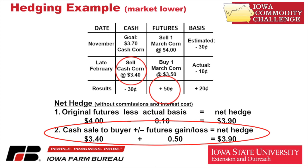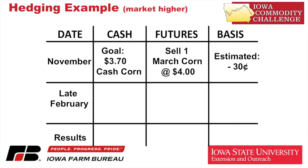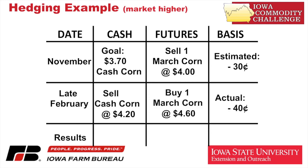That represents a $0.20 basis gain versus what we expected — basis being very important when we're using futures and options. Now let's take the same story and move the market higher this time, and move basis the other way, because basis is not always going to move in our favor as a sold hedge. The setup is exactly the same as before: selling one March corn contract at $4.00 with a goal of $3.70.